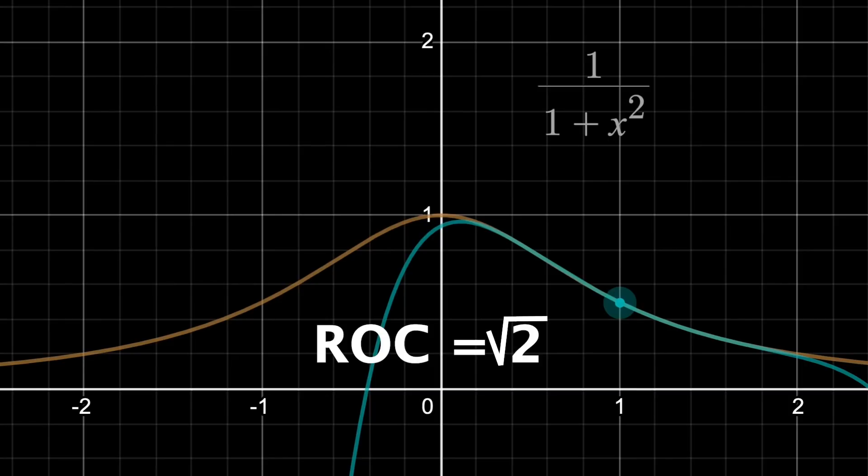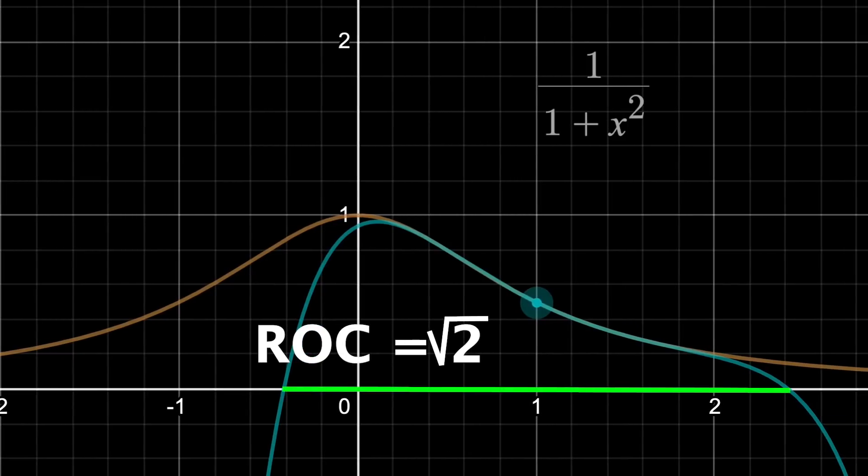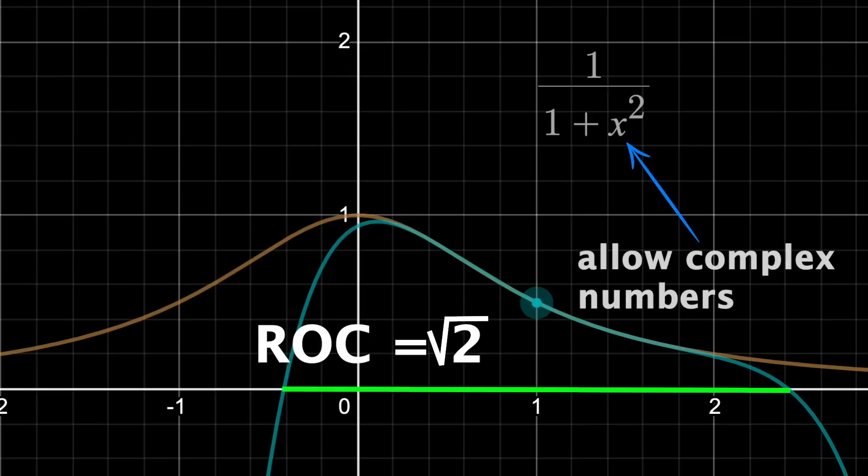So, what's going on? Why these numbers? Because there doesn't seem to be anything special root 2 away from this point, for example. But there actually is. And all we gotta do to see this is allow complex numbers to be input to our function, not just real numbers.